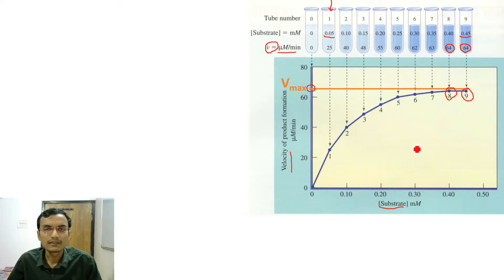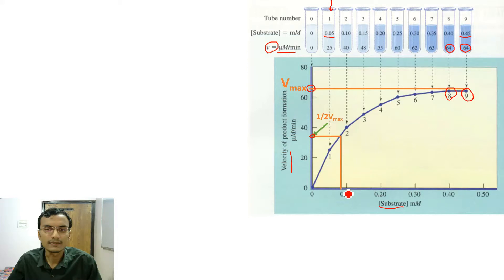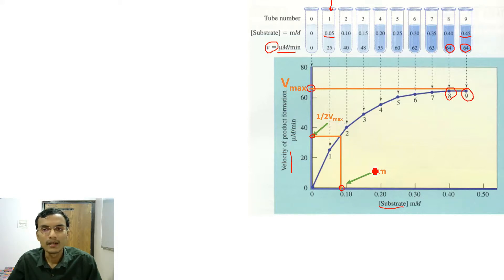If we take half of Vmax and draw a horizontal line to the curve, then extend that line down to the x-axis, the value at that point is known as Km, or the Michaelis constant. Km is the substrate concentration required to produce half-maximum velocity.